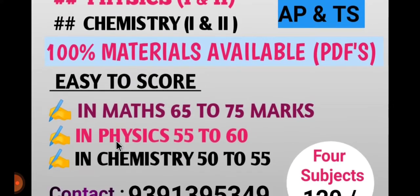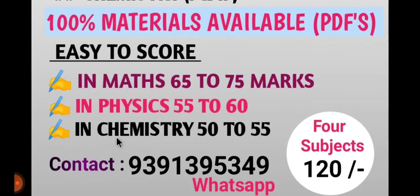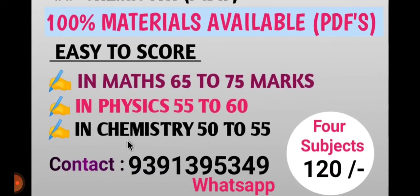Here is the benefit: Maths coverage is 65 to 75 marks, Physics is 55 to 60 marks, Chemistry is 55 marks, and Biology is also prepared — it is complete. You can access this material for 4 subjects for 120 rupees using a password for 1st year and 2nd year.